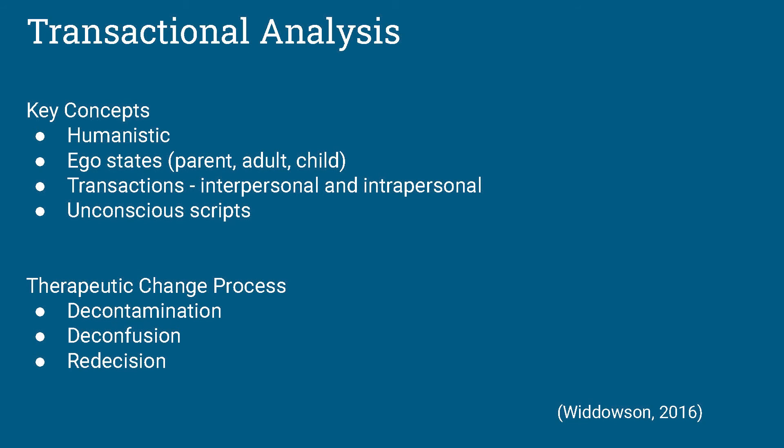Unconscious scripts are repetitive patterns that stem from childhood — the early decisions made unconsciously about how life should be lived. The therapeutic change process consists of decontamination, de-confusion, and re-decision. Decontamination involves the therapist and client working with the adult ego to challenge irrational beliefs and cultivate an ability to be in the here and now — this is mostly a cognitive process. De-confusion is a cathartic process that helps a person work on the hidden feelings or unmet needs of the inner child, making sense of the past and becoming aware of childhood wounds.